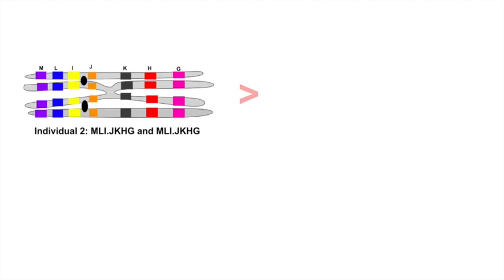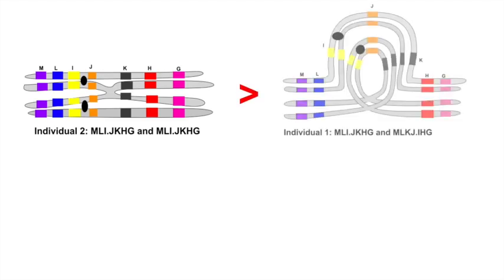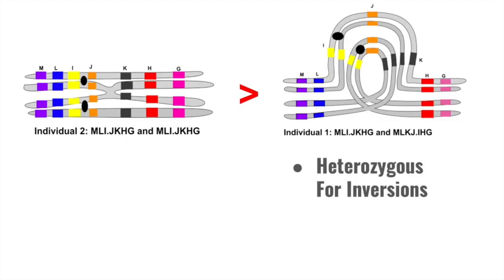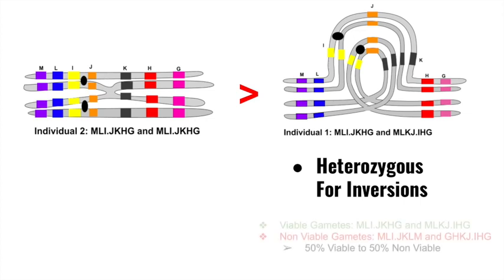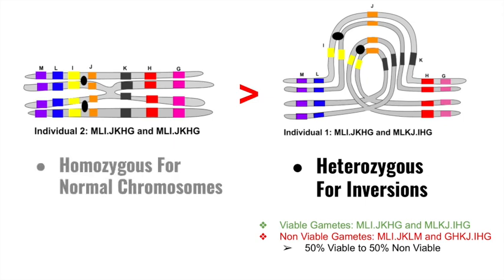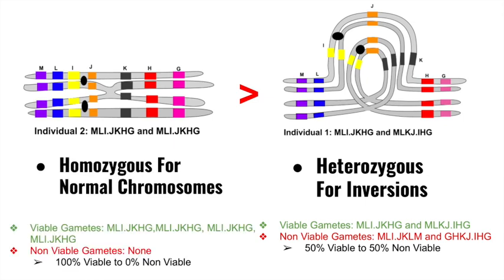Individual 2 has greater fitness than individual 1 because individual 1 is heterozygous for inversions. These types tend not to survive and produce as many offspring, meaning they will be selected against in the wild. Remember, only half of individual 1's gametes were viable. Individual 2 was homozygous for normal chromosomes and all of its gametes were viable.